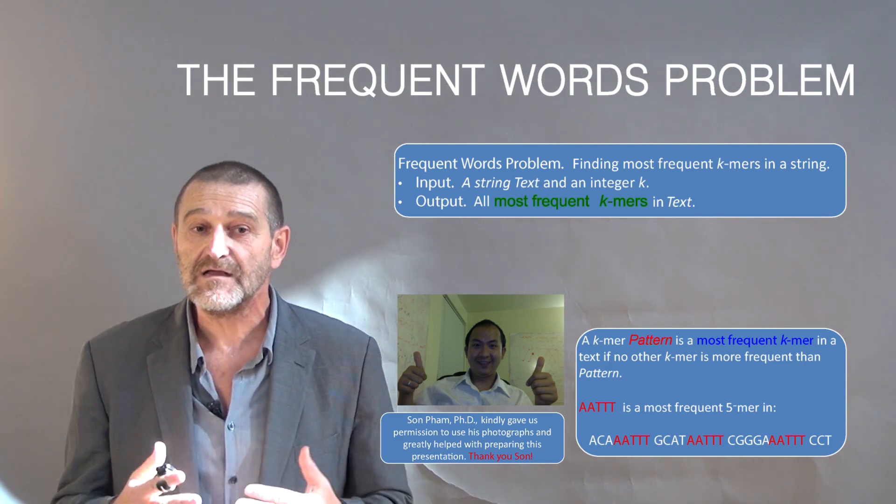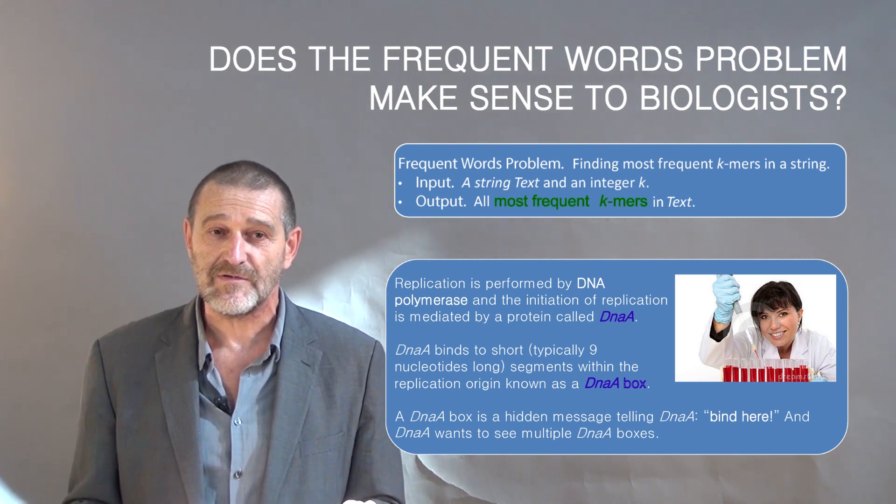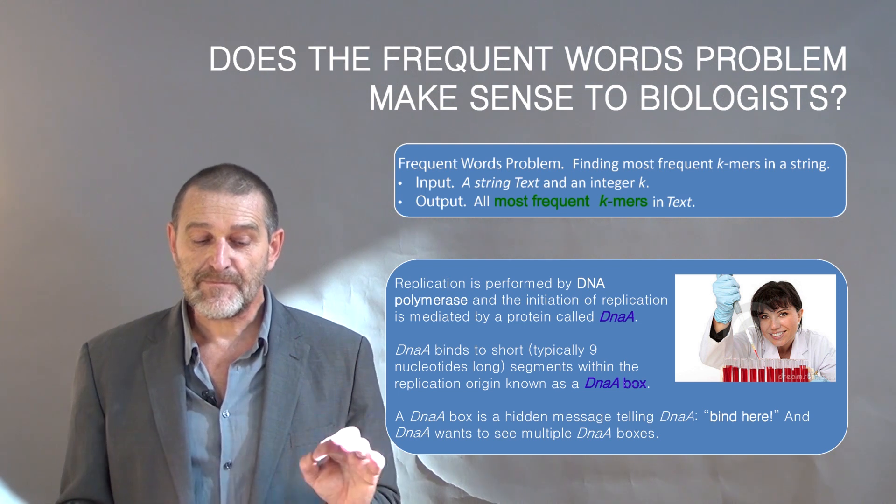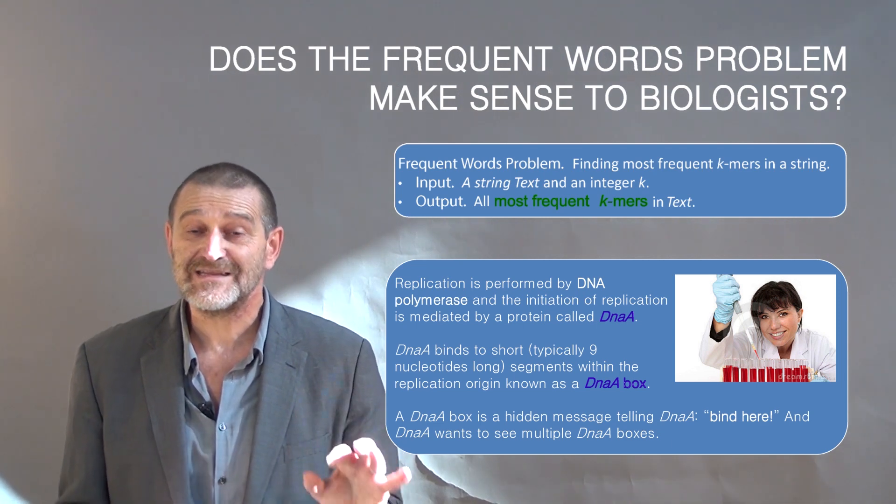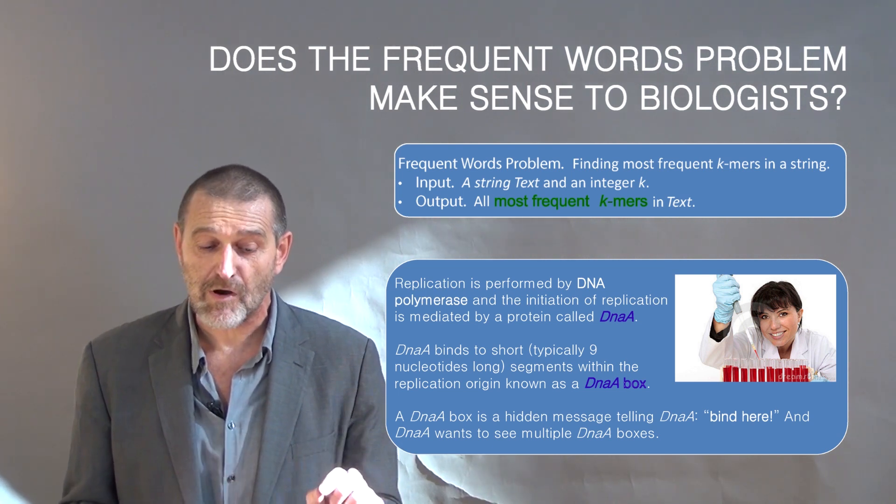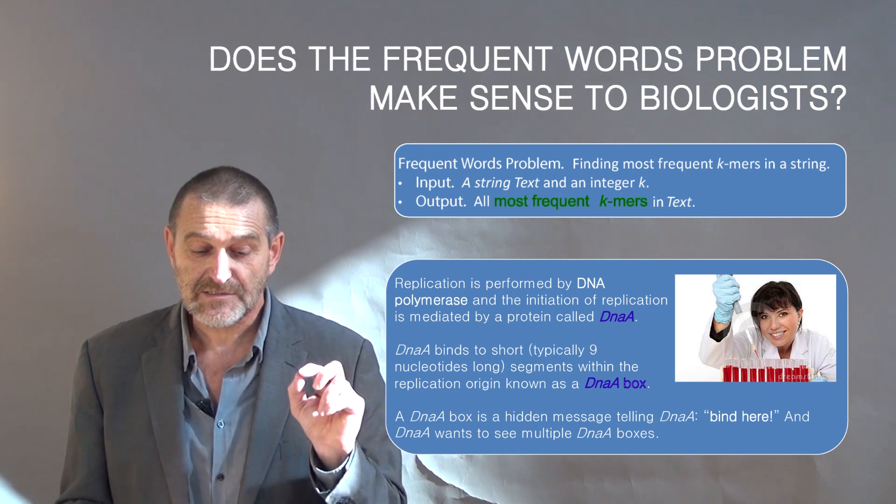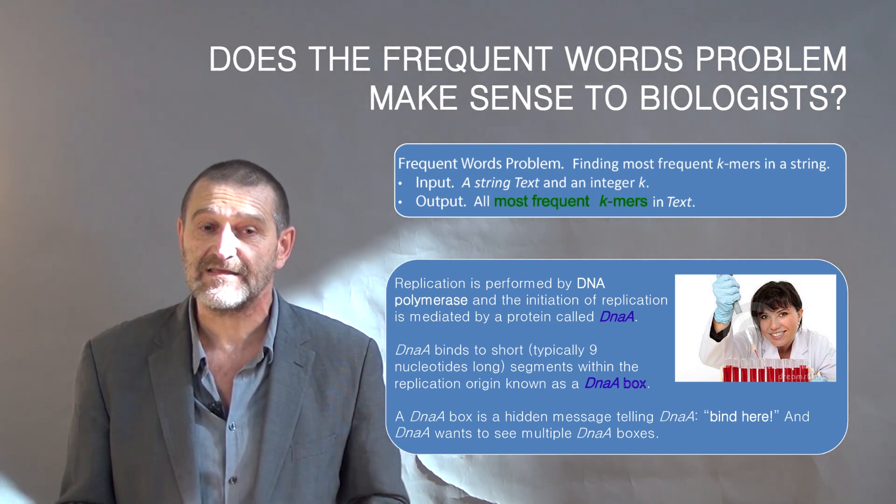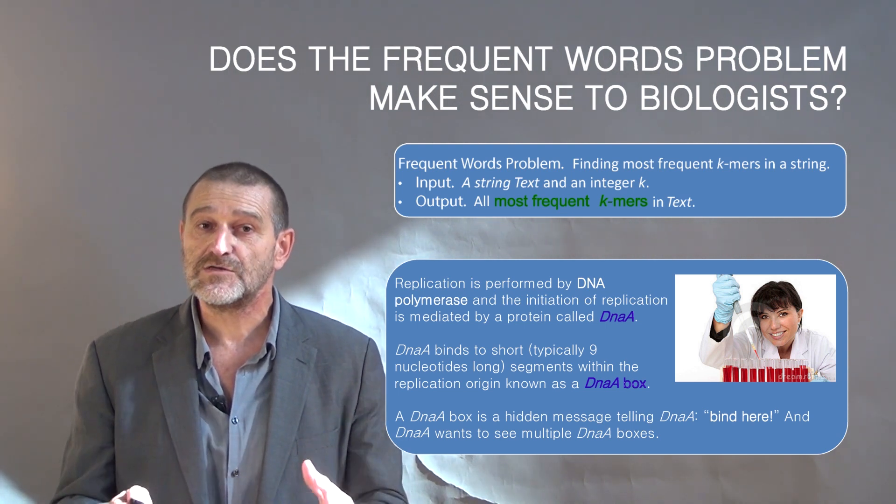Remember, bioinformatics is about connecting computational and experimental ideas. And if we check with biologists, it also looks that they are quite satisfied with this problem. Indeed, replication is performed by DNA polymerase, but to initiate replication, DNA polymerase needs a protein called DnaA. DnaA binds to a short, typically just nine nucleotide segments within the replication origin that is known as a DnaA box. A DnaA box is actually a hidden message that we are looking for. And the DnaA box essentially tells the DnaA protein, bind right here. The DnaA protein wants to see multiple DnaA boxes to bind efficiently. So it looks like we brought computational people and biologists on the same page. And we are now ready to try to solve this problem.